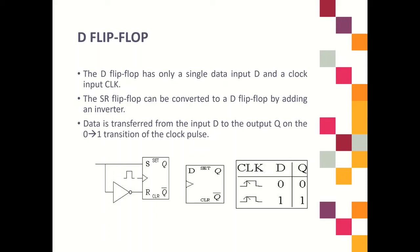Next is D flip-flop. D flip-flop has a single data input D and a clock input. We can convert the SR flip-flop to D flip-flop by adding an inverter. This is the diagram for D flip-flop. The D is transferred from the input D to the output Q on the 0-to-1 transition of the clock pulse. The truth table has only one input, D, and one output, Q.